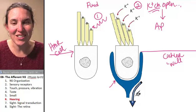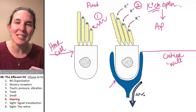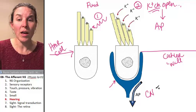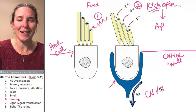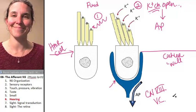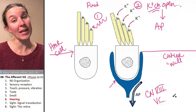The action potential gets generated. The message gets sent through cranial nerve eight, vestibulocochlear. And the message gets sent to your brain and you hear sound.